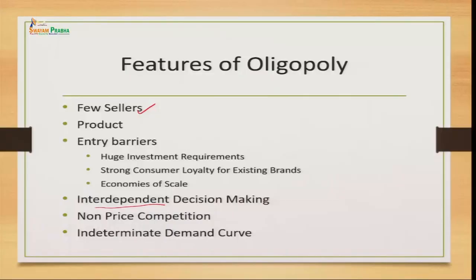The demand curve in oligopoly is indeterminate — it cannot be determined in advance. In perfect competition the demand curve is perfectly elastic, in monopoly it is highly inelastic, and in monopolistic competitive market it is highly elastic. But we cannot determine the demand curve for the oligopoly market; it is indeterminate because there are very few sellers and the products they sell are very close substitutes of each other.